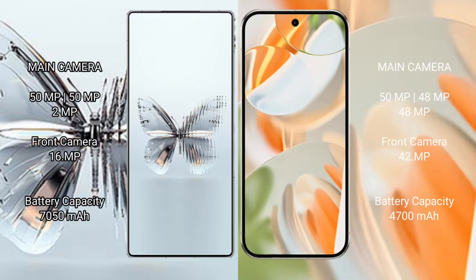Raid Magic 10 Pro Plus features a rear triple camera setup of 50MP, 50MP, and 2MP, with a 16MP front camera. Google Pixel 9 Pro features a rear triple camera setup of 50MP, 48MP, and 48MP, with a 42MP front camera.